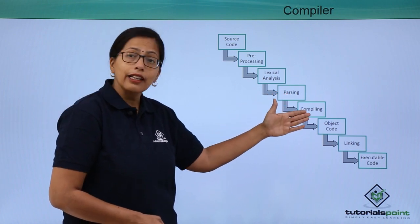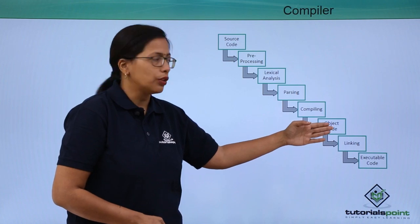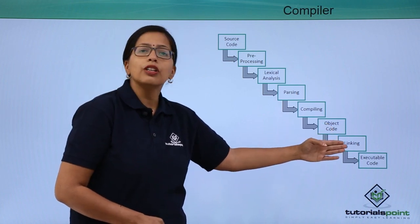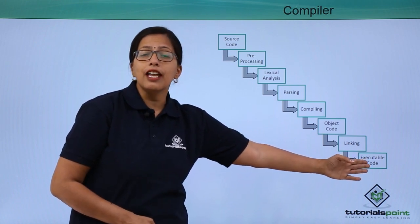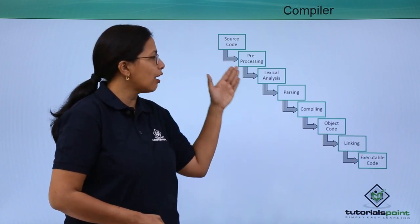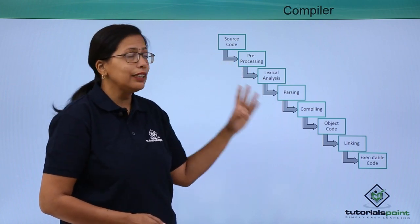Then compiling, then it gets the object code. After the object code, it does some linking and finally it gets the executable code. These are the steps that a compiler follows. Let's see what each of these steps mean in detail.